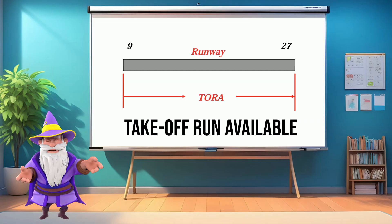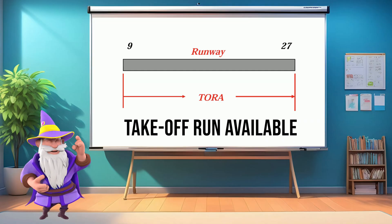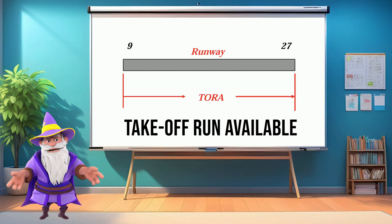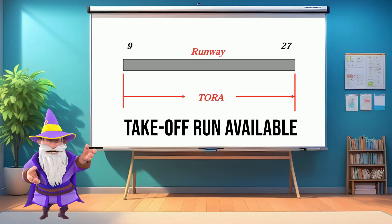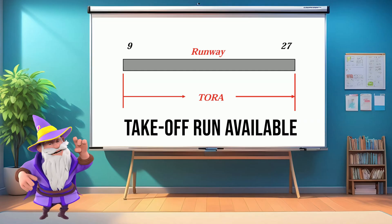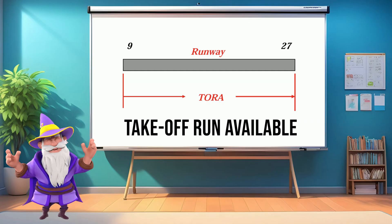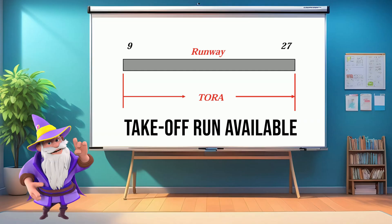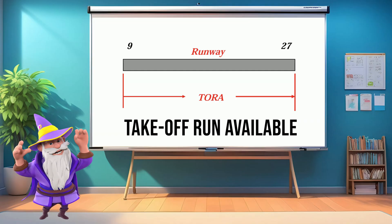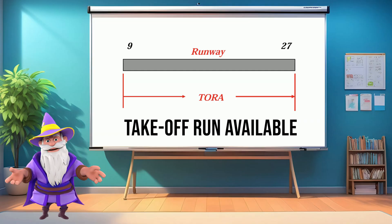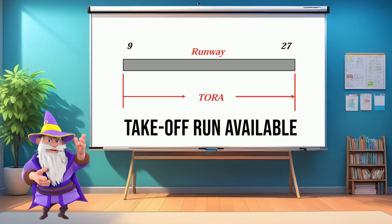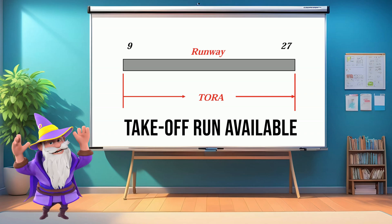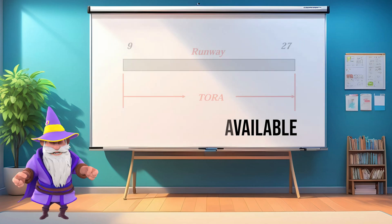For most runways, TORA is simply the full length of the runway. But in some cases, it can be reduced due to displaced thresholds, obstacles, or local operational restrictions. That's why pilots must always check the airport charts to confirm the actual TORA available for their departure.